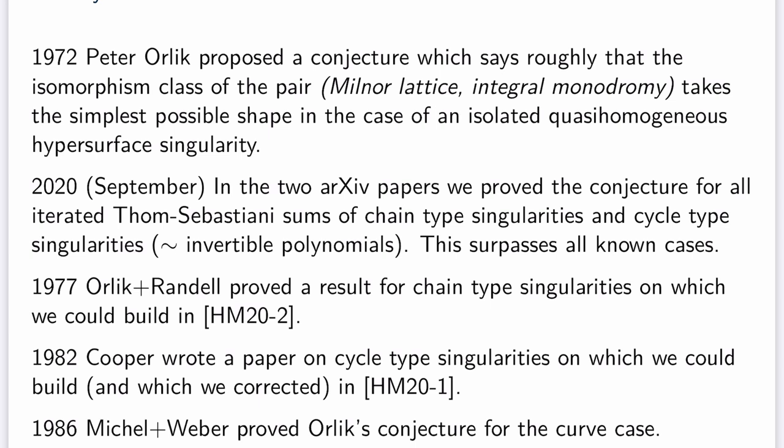I will formulate this conjecture precisely later. In September this year, in the two papers on the archive, we proved this conjecture for all iterated Tom-Sebastiani sums of chain-type singularities and cycle-type singularities — the so-called invertible polynomials — and this result surpasses all the known cases. We could build on earlier work of Orlik and Randell from 1977, where they proved a result on the monodromy for the chain-type singularities. We could also build on a paper of Cooper from 1982 on the integral monodromy of the cycle-type singularities, and we could correct it because there were two serious mistakes in that paper.